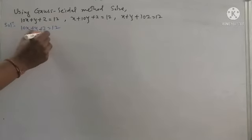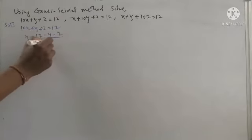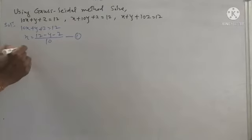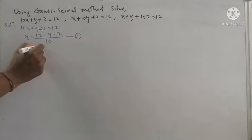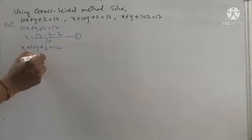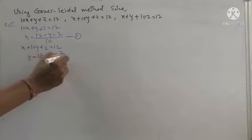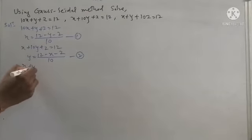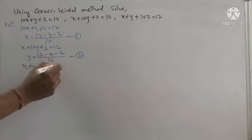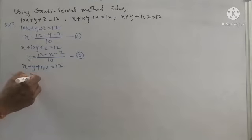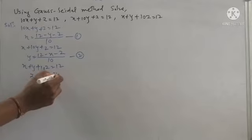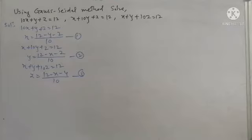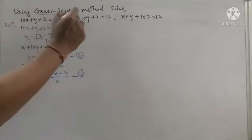We take the first equation: 10x + y + z = 12. From that, x = (12 - y - z) / 10, put this as equation number one. For y, we take equation x + 10y + z = 12, so y = (12 - x - z) / 10, put as number two. For z, we take x + y + 10z = 12, so z = (12 - x - y) / 10, put as number three.